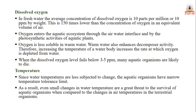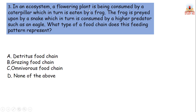Regarding temperature: since water temperatures are less subject to change, aquatic organisms have a narrow temperature tolerance limit. As a result, even small changes in water temperature are a great threat to the survival of aquatic organisms compared to the changes in air temperature faced by terrestrial organisms. Now consider this question: in an ecosystem, a flowering plant is consumed by a caterpillar, which is eaten by a frog, which is preyed upon by a snake, which is consumed by an eagle. What kind of food chain does this feeding pattern represent? Please answer in the comment box, and in the next class we will continue with eutrophication.